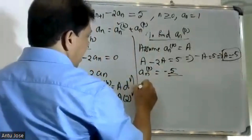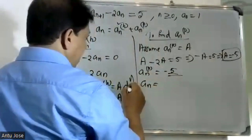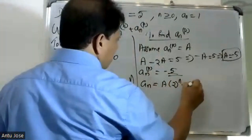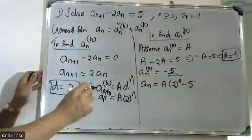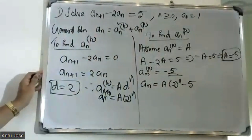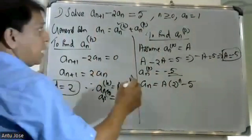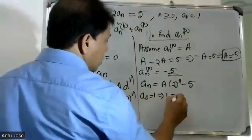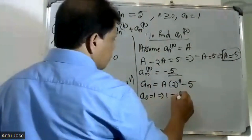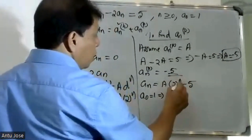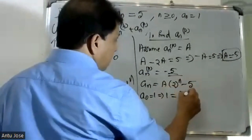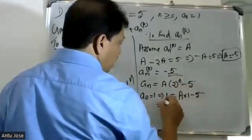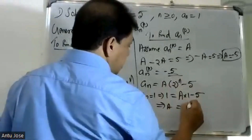Therefore the general solution is a(n) equals a(n)^h plus a(n)^p, that is a(n) equals C into 2 raised to n minus 5. Applying the initial condition a(0) equals 1: C into 1 minus 5 equals 1, so C equals 6.